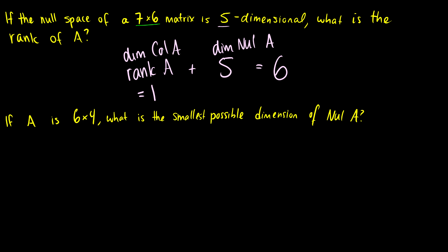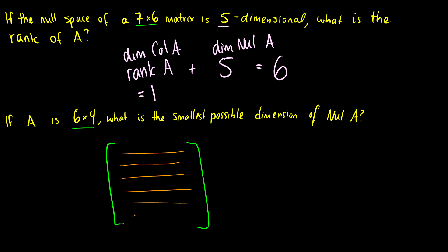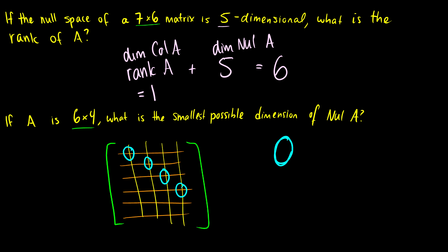The next question requires a little more thought. If A is 6 by 4, what's the smallest possible dimension of null(A)? We have six rows and four columns. The null space dimension equals the number of non-pivot columns. Since we only have four columns, it's possible to have a pivot in each column — four pivot columns. Therefore, the smallest possible dimension of the null space could be zero, since the dimension of the column space of A could equal four.